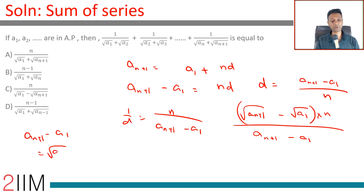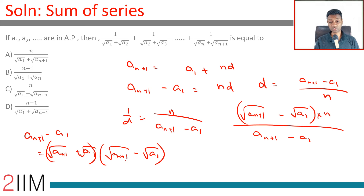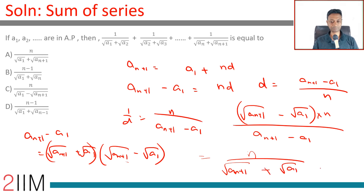Now a_{n+1} - a1 can be written as (√a_{n+1} + √a1)(√a_{n+1} - √a1), so the (√a_{n+1} - √a1) factors cancel, giving the final answer: n/(√a_{n+1} + √a1). Choose answer choice A.